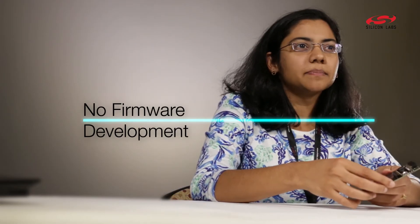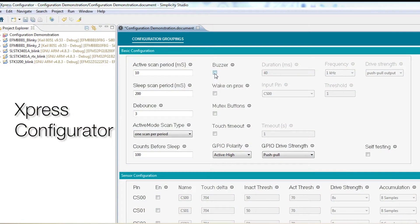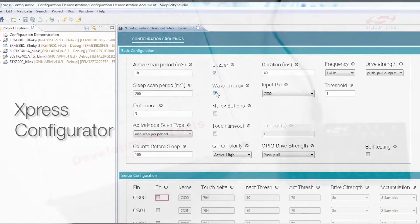Silicon Labs Touch Express devices offer the fastest and easiest way to add Capacitive Sense to any application. No firmware development is required. These devices come with a very simple GUI to help configure the parameters without actually writing any code.